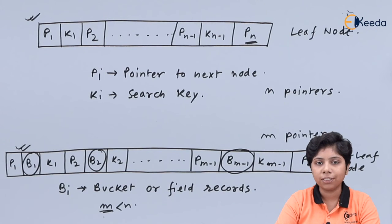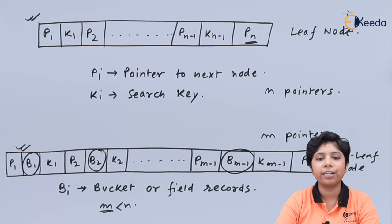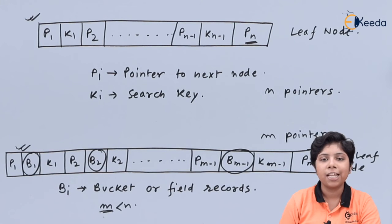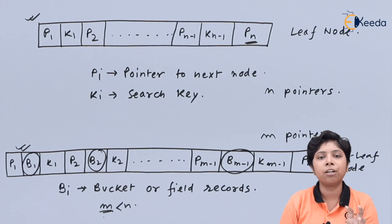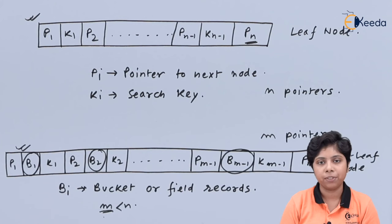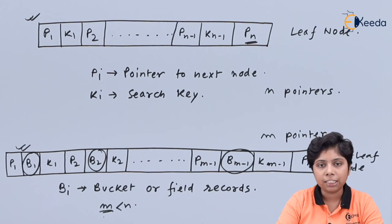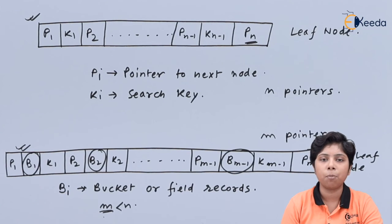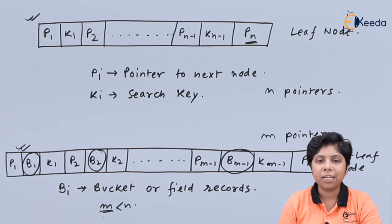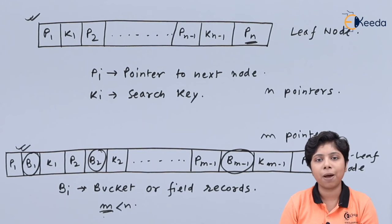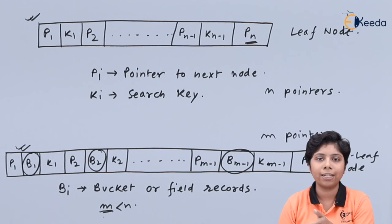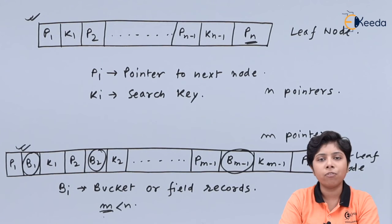Lookups are generally faster than in B plus 3, but it also depends on the search key density. If there are more search keys requiring more non-leaf node traversals, lookups become comparatively faster than B plus 3. With fewer pointers in a non-leaf node, there are fewer fanouts in the B tree, since in B plus 3 every access path must pass through a leaf node before reaching the value.